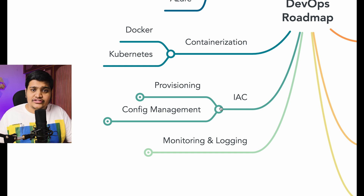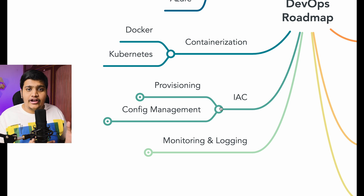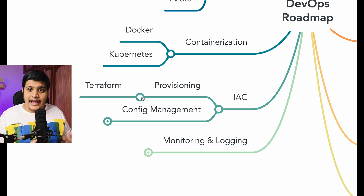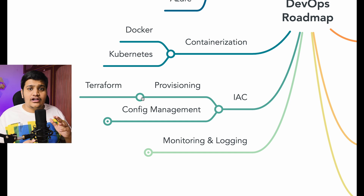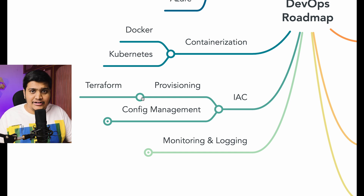In your DevOps role you'll be managing servers, configurations, and infrastructure — and everything should be automated. For infrastructure provisioning, Infrastructure as Code is the standard approach. Terraform is the best option for provisioning: it supports many providers — AWS, GCP, Azure, Oracle, and more. You write code for your infrastructure and with a single click everything is provisioned. Whatever changes or configurations you need, you just update your code and it's done.